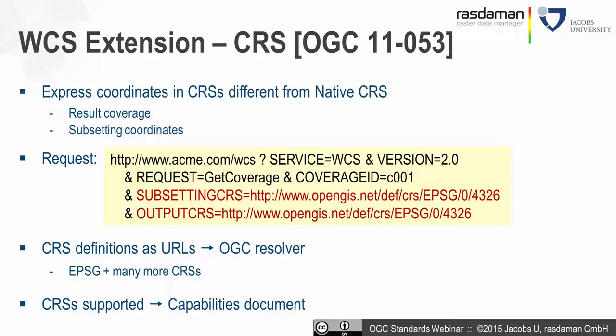CRS transformation also involves interpolation — the same situation as with scaling. If the interpolation extension is not supported, the server can use any interpolation method. A server that supports the interpolation extension would allow the client to specify the method, and those settings would apply to CRS operations as well.